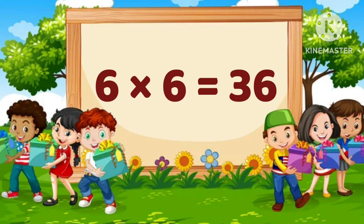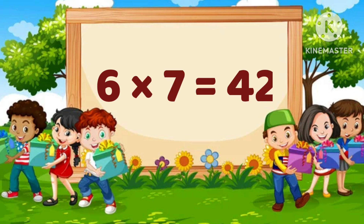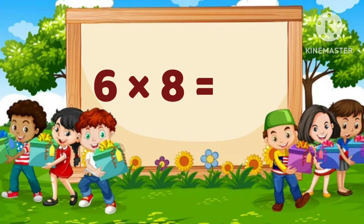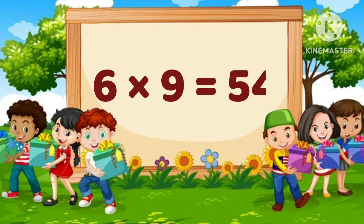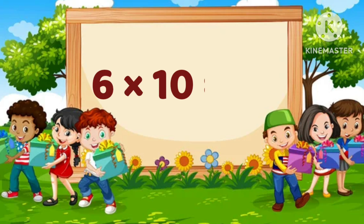6 times 6 is equal to 36. 6 times 7 is equal to 42. 6 times 8 is equal to 48. 6 times 9 is equal to 54. 6 times 10 is equal to 60.